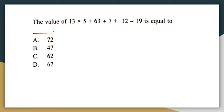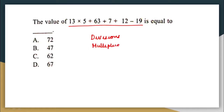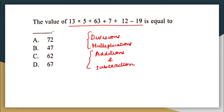Next question: the value of 13 multiplied by 5 plus 63 divided by 7 plus 12 minus 9. Whenever you have divisions, multiplications, additions, and subtractions together, always do divisions first, followed by multiplications, then additions and subtractions. The order of addition and subtraction among themselves doesn't matter, but divisions and multiplications must come first.